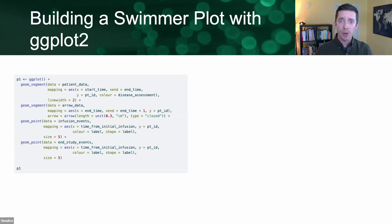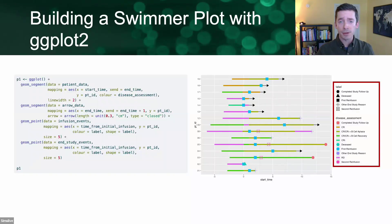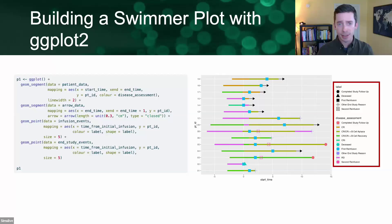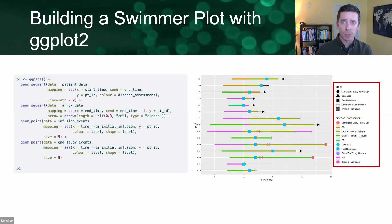This works pretty well except for the fact that the legend is a bit challenging to read for a few reasons. One, the labels for the different discrete categories are repeated. Two, in the bottom color section under disease assessment markers and lanes, statuses are mixed when these are really two different kinds of data — one being continuous, one being discrete. And this is more or less the whole crux of swimmer plot difficulties with R.